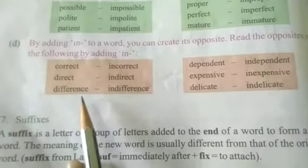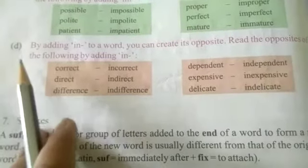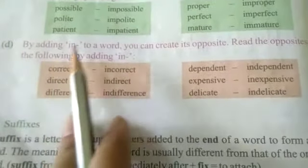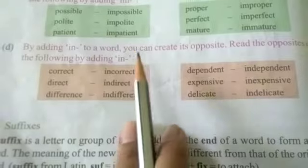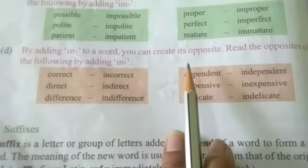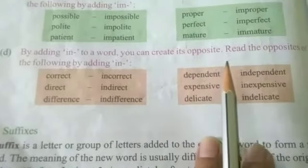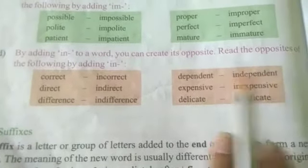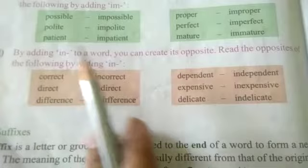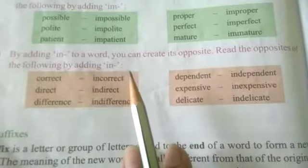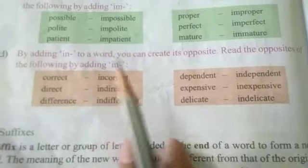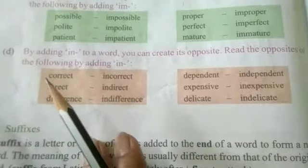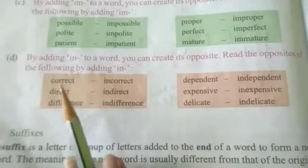Hello friends and all my dear children, today's topic D. By adding 'in' to a word, you can create its opposite. Read the opposite of the following by adding: incorrect — incorrect — sahih, galat.